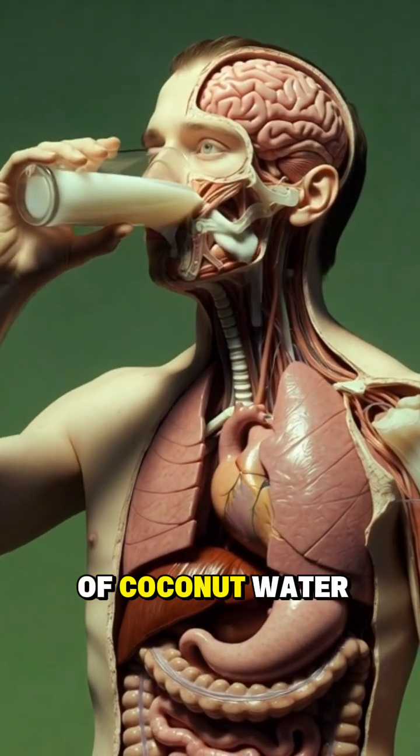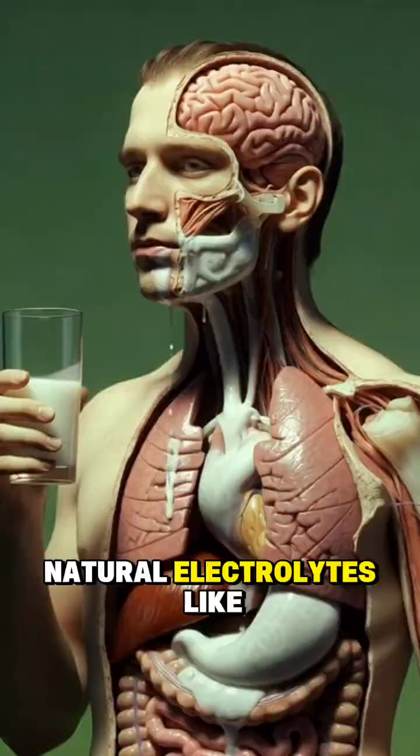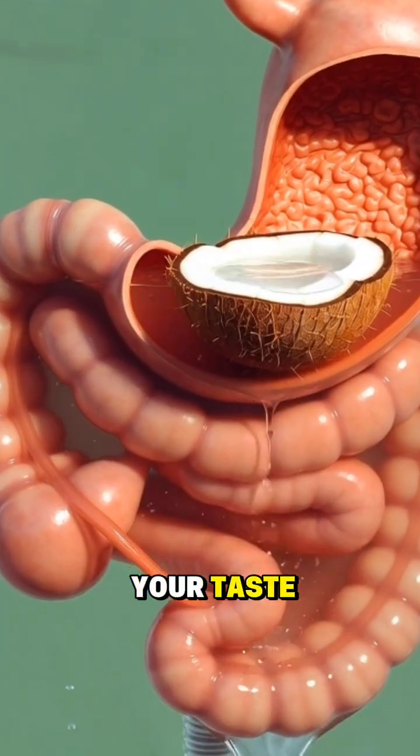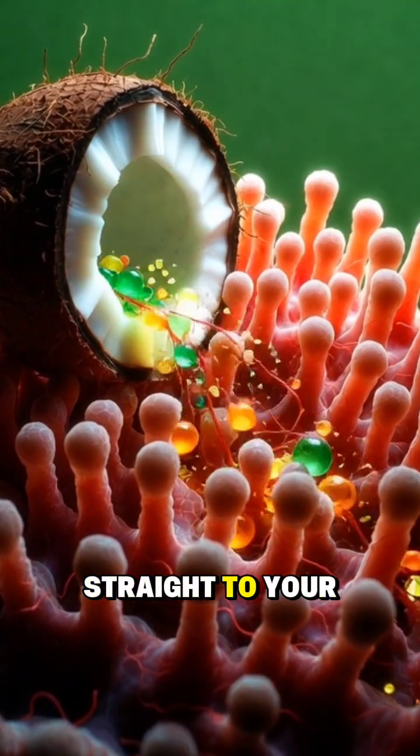When you take your first sip of coconut water, hydration begins instantly. Natural electrolytes like potassium, magnesium, and sodium activate your taste receptors and send refreshing signals straight to your brain.